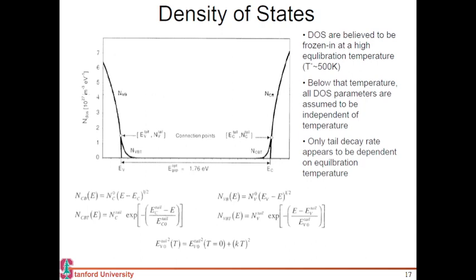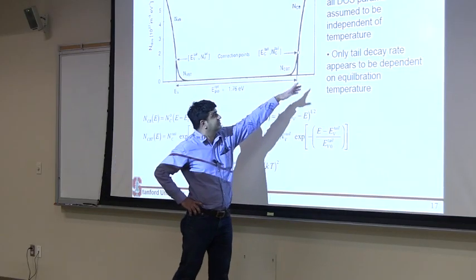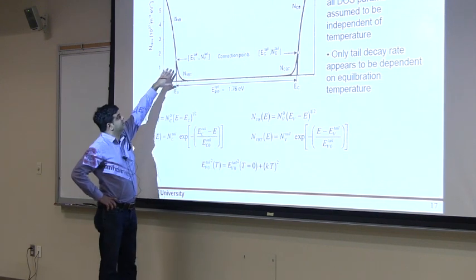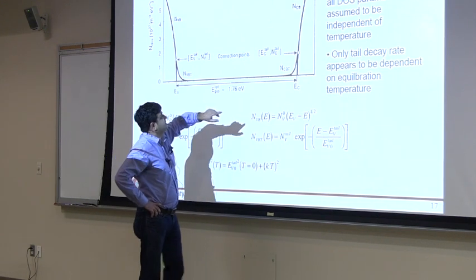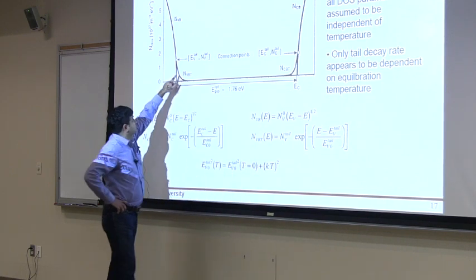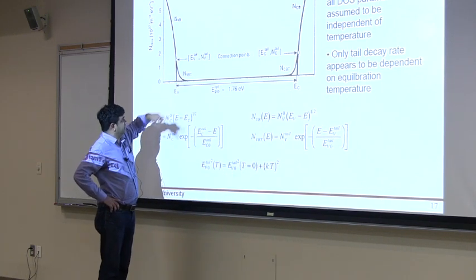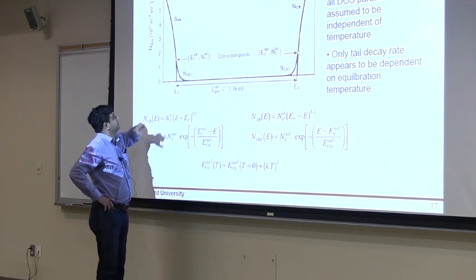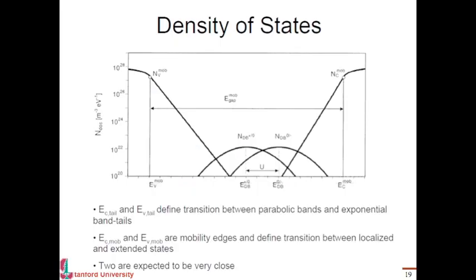It's plotted here as density of states in linear scale, and it essentially falls off exponentially as you move away from these band edges. This is plotting the same thing in log scale. You see that you have that square root relationship beyond the band edges, but then you get this linear-looking tail because it's plotted in log scale now, and you also get these defect states in the middle.